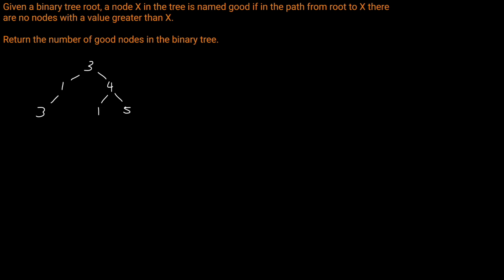For example, let's look at this tree here. What would be the number of good nodes in the binary tree? We start at the root, and obviously at the root we haven't seen any nodes with a value greater than X. So therefore we have one good node at the root.